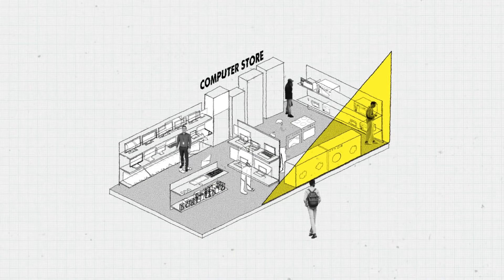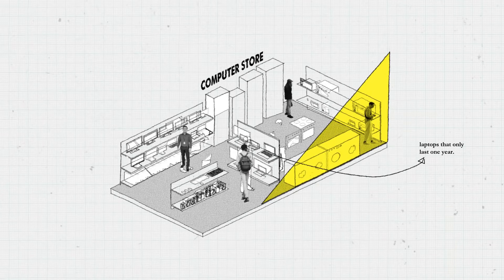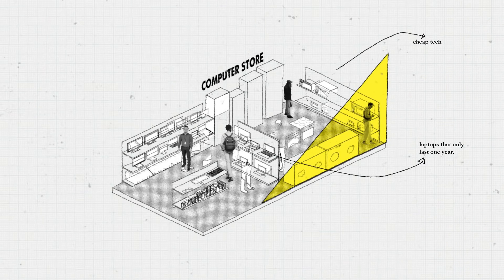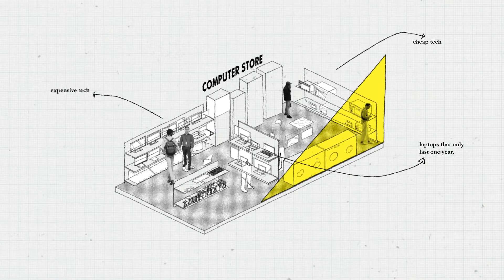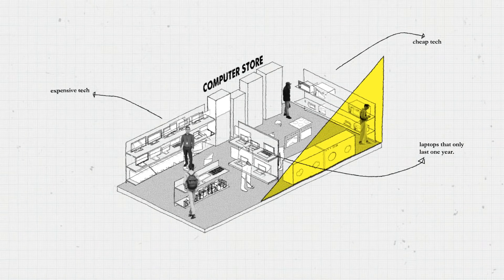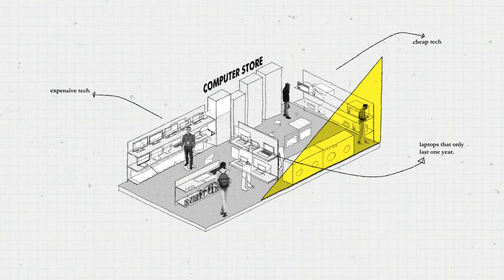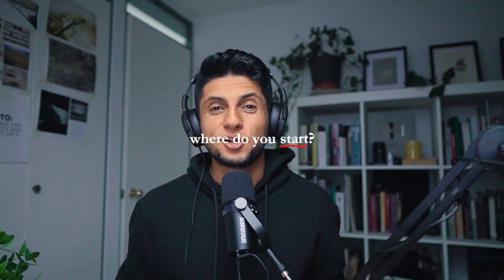So you walk into the store and you see a wide range of options from the super cheap computers that mostly only work for opening a Word document, to the Mac you've always wanted — but it costs almost the same as your school tuition. I recommend you keep these few elements in mind: hard drive, CPU, RAM, graphics card, and screen size. Those five things are the most important when buying your computer.